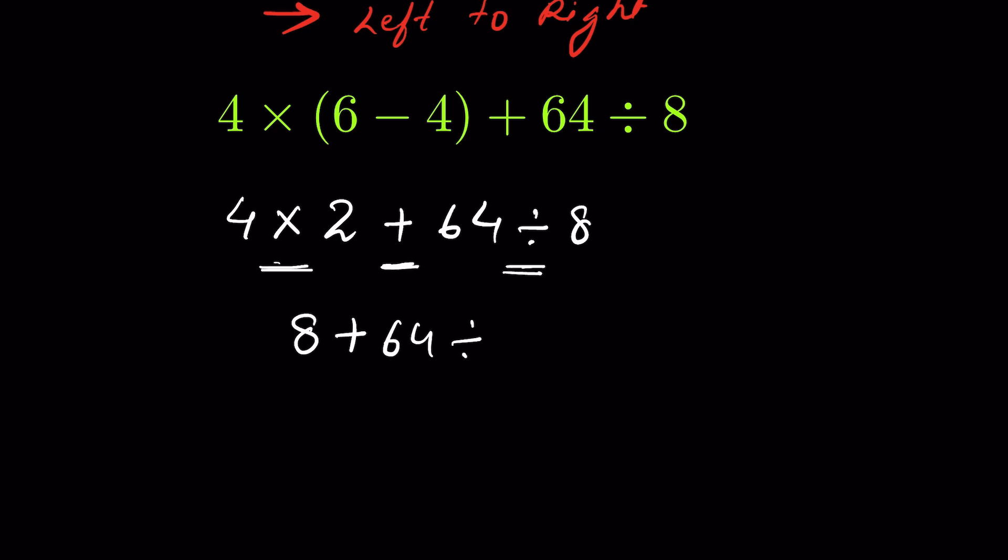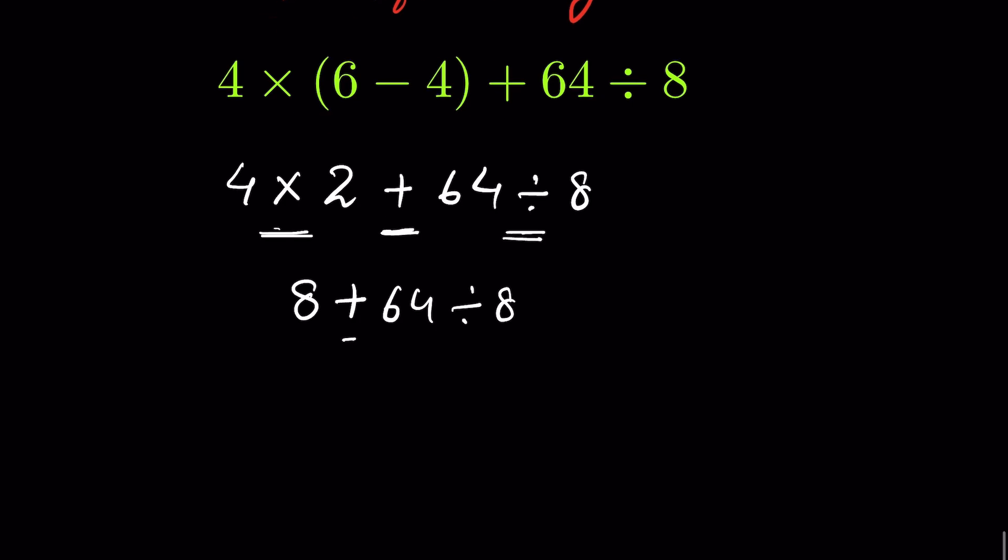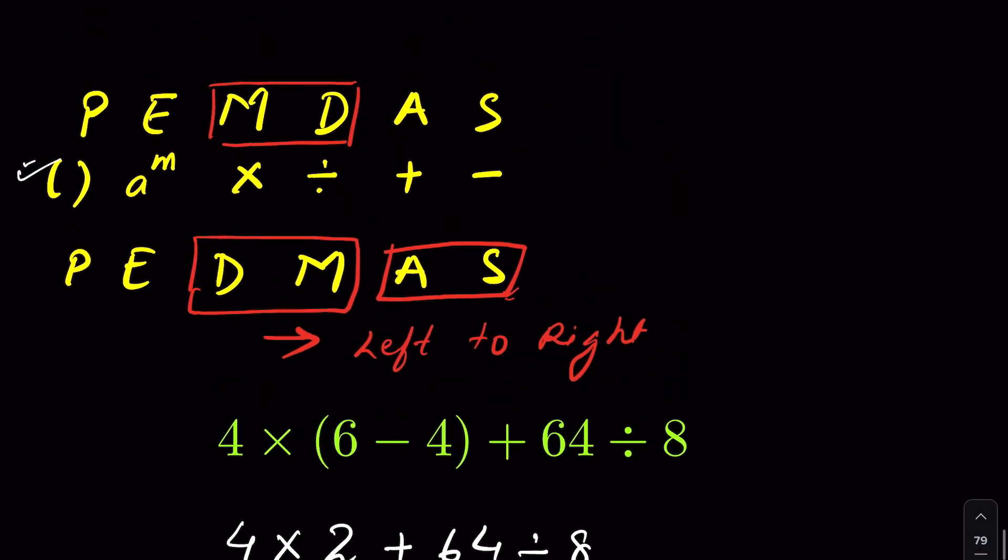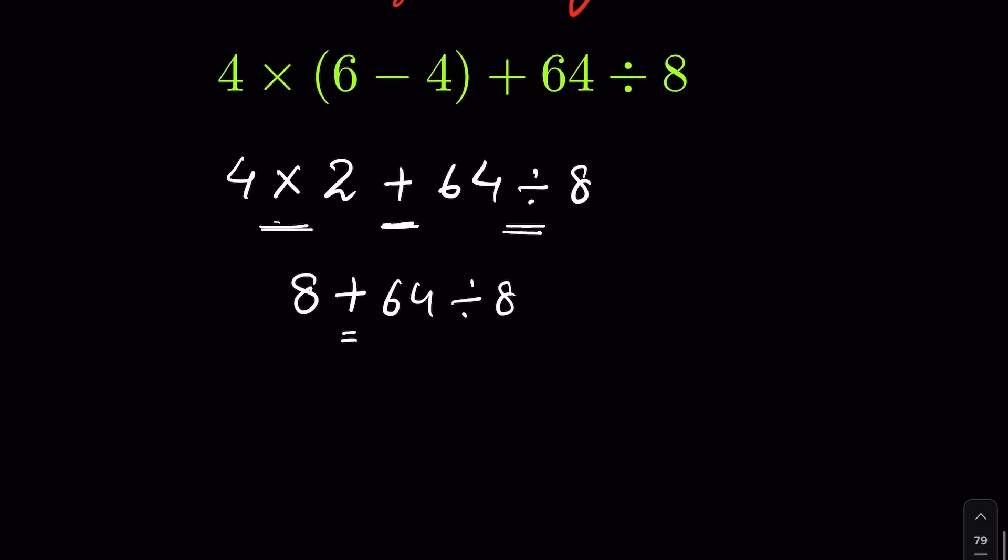Now from left to right there is addition, but remember that in PEMDAS this left to right choice is between division and multiplication, and not between division and addition or multiplication and subtraction. Addition and subtraction will always come after division and multiplication. So this addition we cannot solve first. First we will have to solve the division.